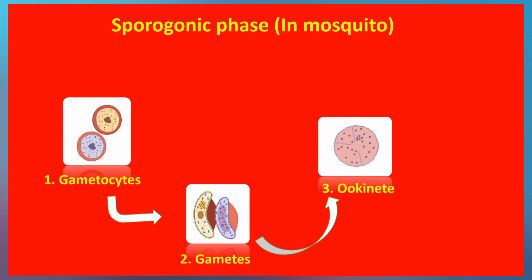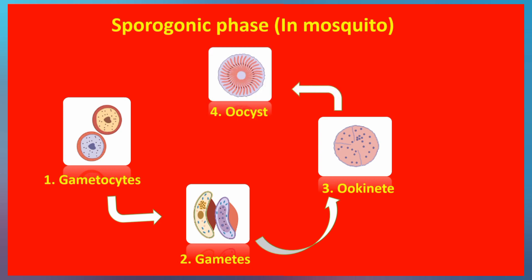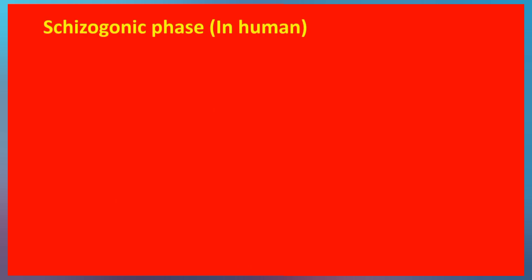The ookinete then penetrates the midgut wall and further develops into the oocyst. The oocyst then produces thousands of sporozoites stored within it. This is basically the sporogonic phase — starting from the picking up of gametocytes from the infected person's blood all the way to the development of the oocyst, which produces several sporozoites.